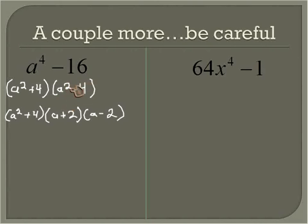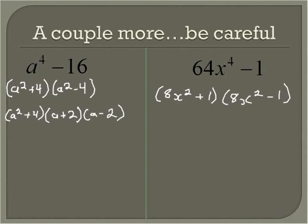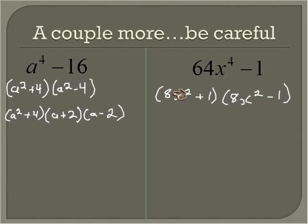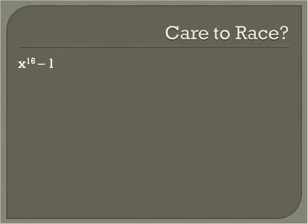Taking the square root of the first term plus the square root of the second, then the square root of the first minus the square root of the second. Now, 64 is a perfect square — it's 8 times 8 — so we get 8x squared plus 1, times 8x squared minus 1. However, be careful here: 8 is not a perfect square, so we can't factor 8x squared minus 1 any further. That would be the final answer for this one. It's important to keep on your toes and not factor when the term isn't a perfect square.